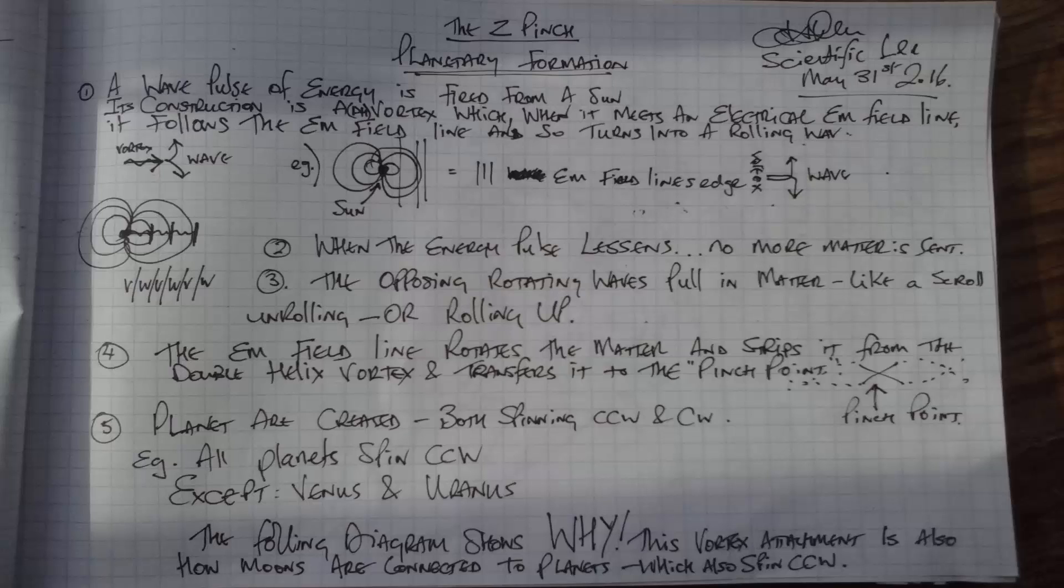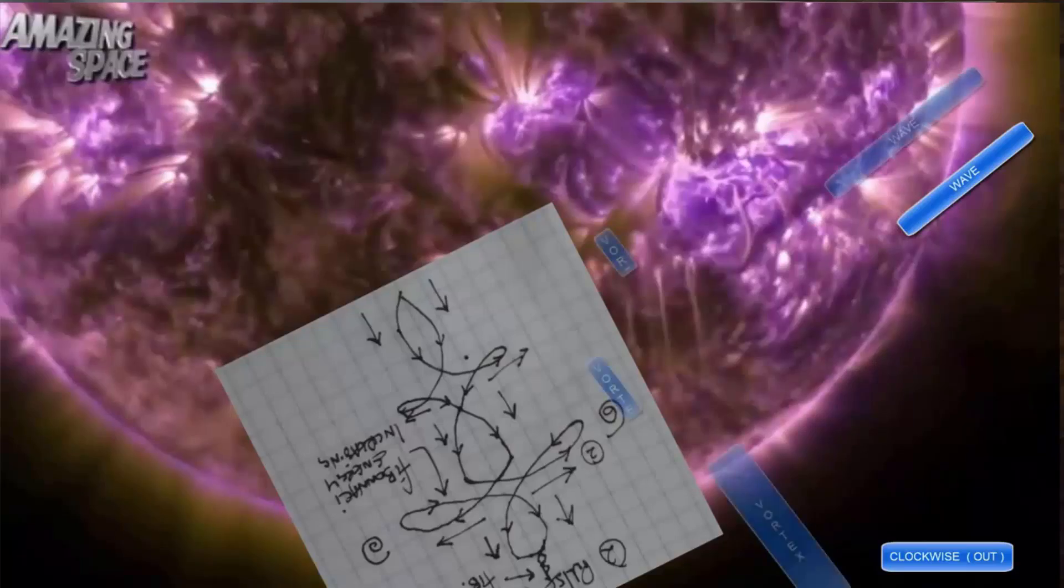You can see the straight lines there. Those straight lines are where the Birkeland current double helix vortex turns into a wave as it travels perpendicular to the original flow and follows the EM field left and right. I have confirmed this on video with a 4K video of the sun and my constructed design of how vortex to wave occurs shown here.